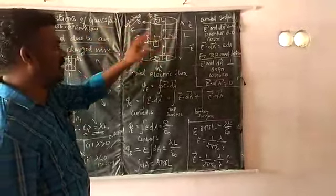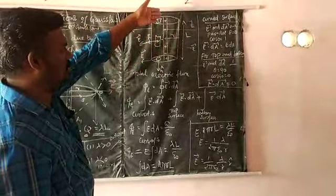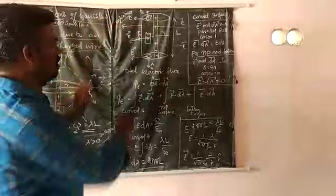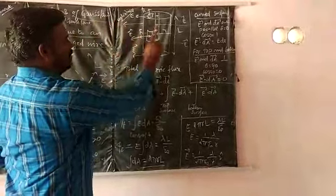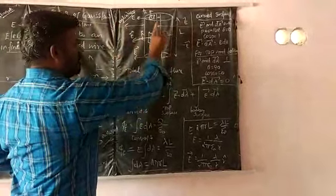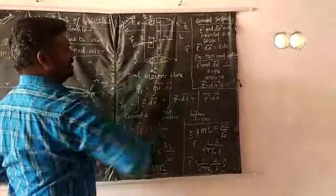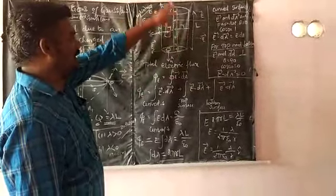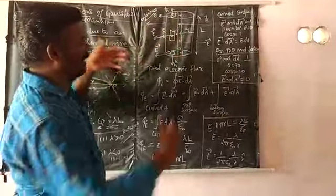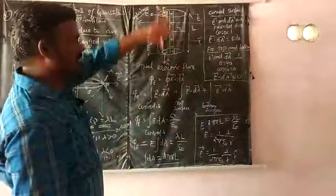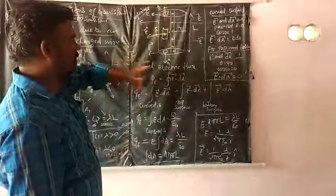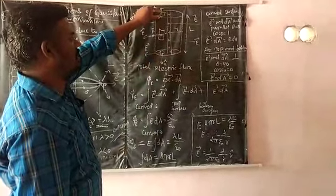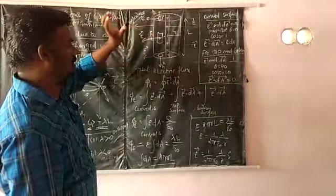The radius of the cylinder is R. The electric field created due to the positively charged wire acts in the outward direction. From a positive charge, the electric field is directed outward. If the charge distribution is negative, the electric field will be directed towards the charged wire. Let us consider the three elemental areas: the top, the bottom, and the curved surface.